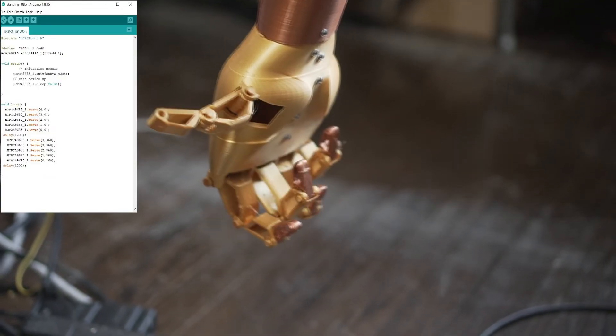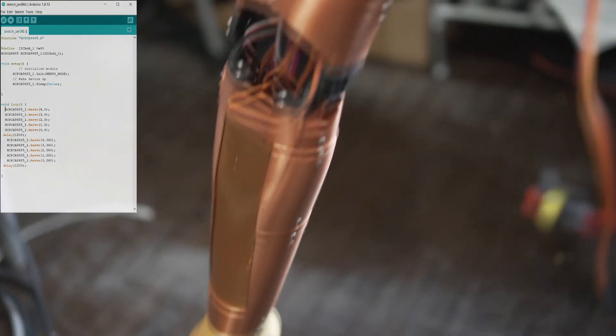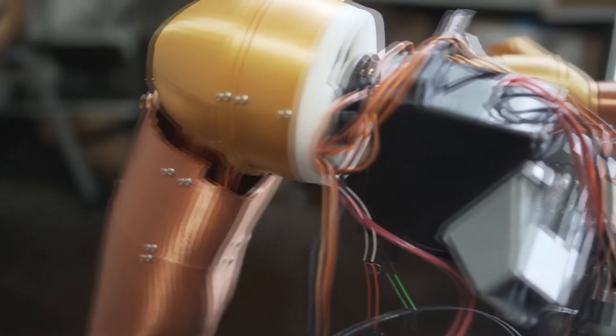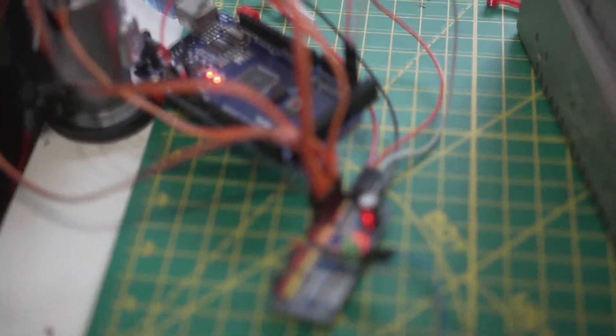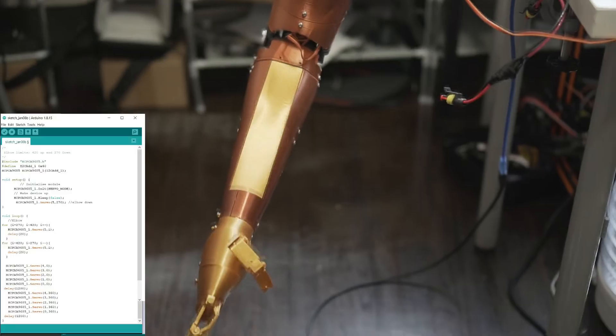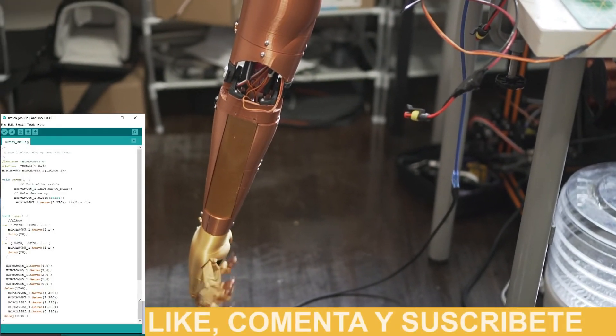Now you will see very simple examples coding in Arduino. This first one is to move all the fingers. Now we are making the elbow move after the fingers.